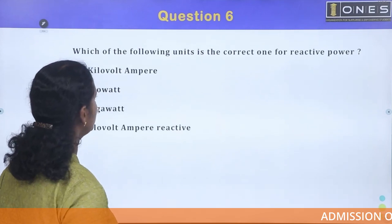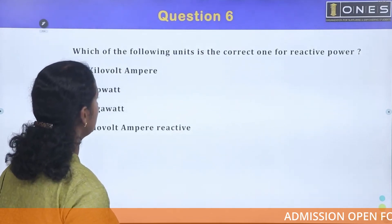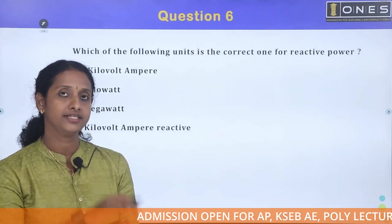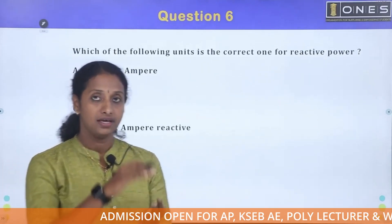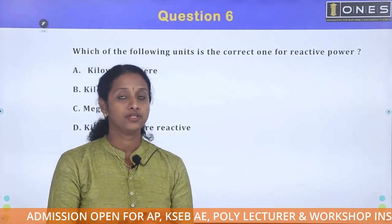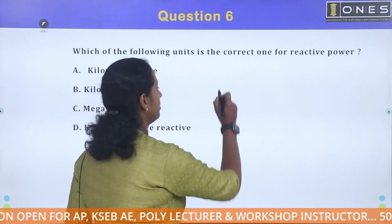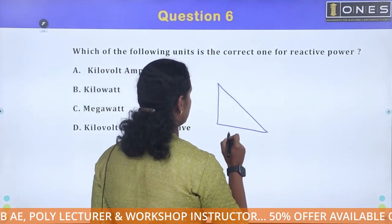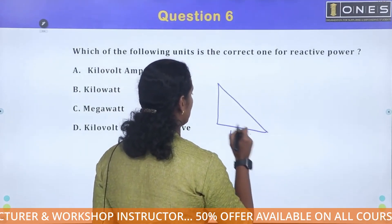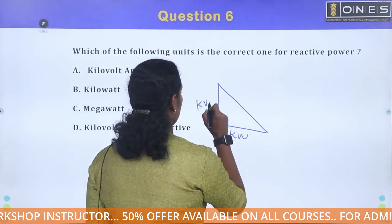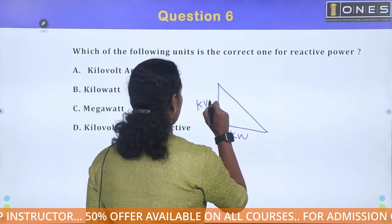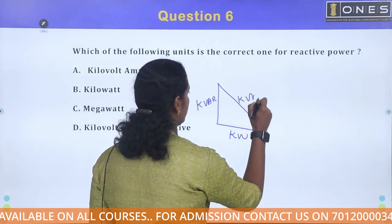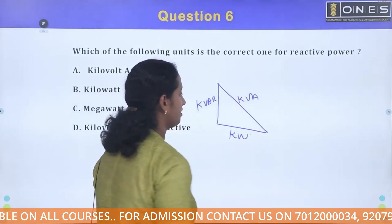Which of the following units is the correct one for reactive power? The power is active power, reactive power, and apparent power. Let's take a look at the diagram. This is active power kilowatt, and this is reactive power kVAR. And this is apparent power kVA.